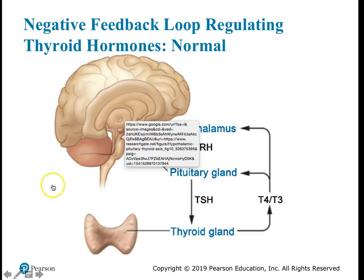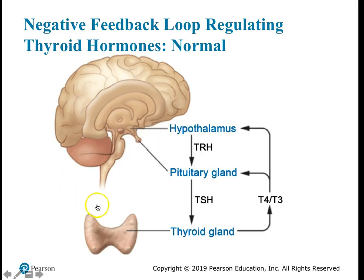The hypothalamus produces TRH, which affects the anterior pituitary. The pituitary produces TSH, which travels via the bloodstream to the thyroid gland at the base of the throat and stimulates those cells to produce T3 and T4. Levels of T3 and T4 are carefully regulated — if too high, they are lowered; if too low, they are raised.